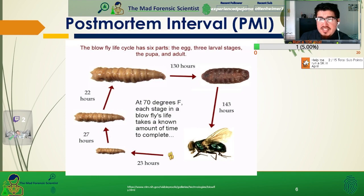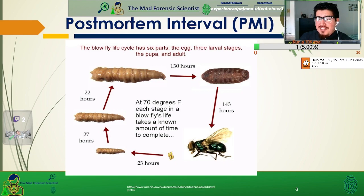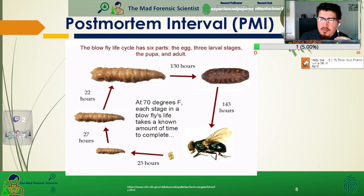After 27 hours they become second instar larvae — they molt and become a second instar. After 22 more hours they molt again and become third instar, and then they become a pupa after 130 hours. Then 143 hours later they emerge as adult flies. So held under these 70-degree temperature conditions, they will emerge this many hours after.